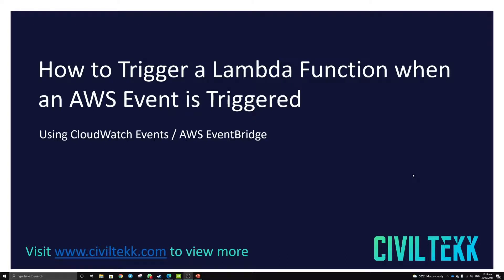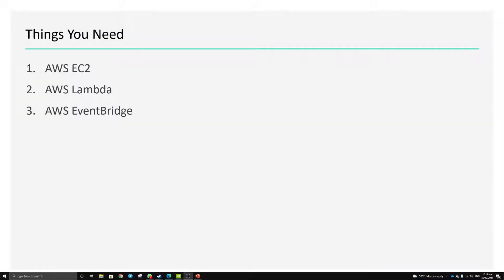Good morning everyone. Today we'll be looking at how to trigger a Lambda function when an AWS event is triggered using CloudWatch Events, currently now known as AWS EventBridge. We'll be using AWS EC2 as an example — turning on and off the machine using AWS EventBridge as a medium to receive that event, because AWS logs all your management API calls, and then it will trigger an AWS Lambda function.